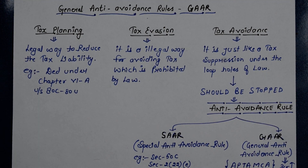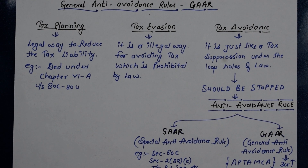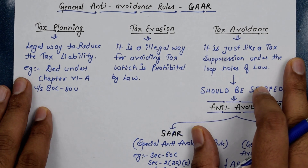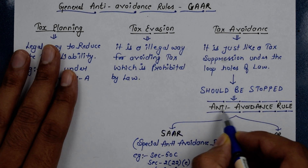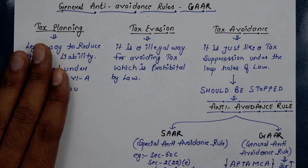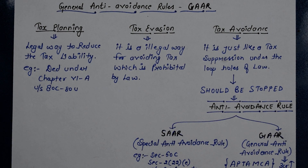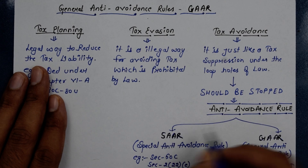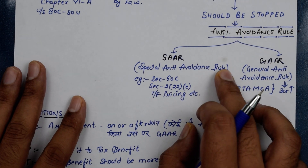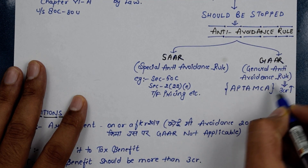Lawyers and tax experts have the best knowledge of law. They know what is written in law and what is not written in law, and what they can do for their benefit. They find the loopholes. If the law has not been clear and there are loopholes, people use the concept of tax avoidance. The government needs to stop this, and that is why we have the anti-avoidance rule — divided into two parts: SAR (Special Anti-Avoidance Rule) and GAAR (General Anti-Avoidance Rule).